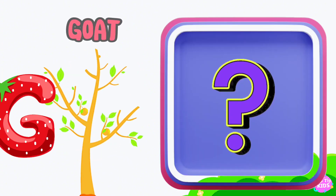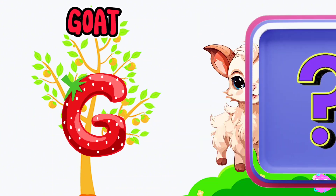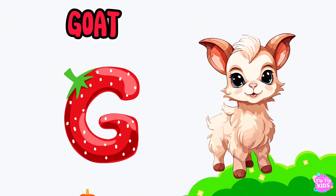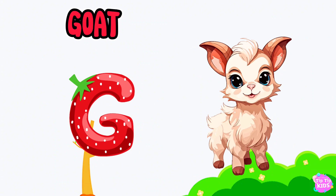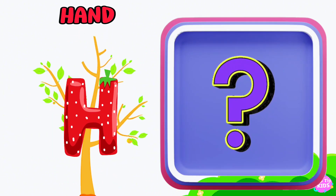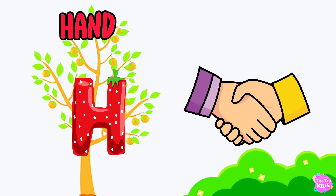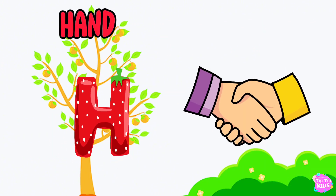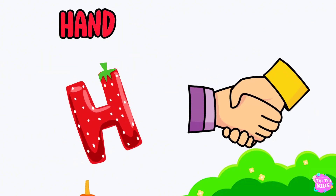G is for goat, g-g-goat. H is for hand, a-a-hand.